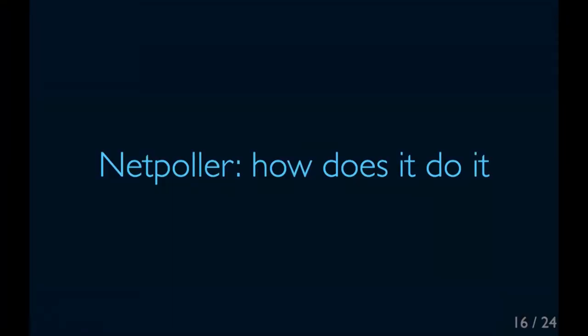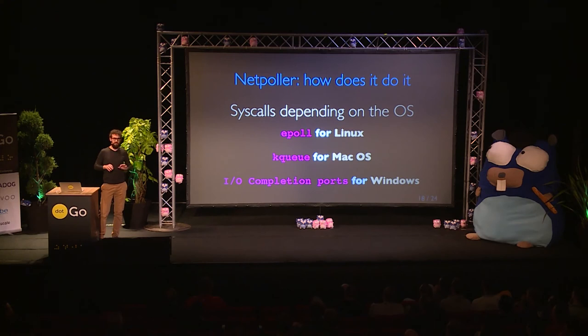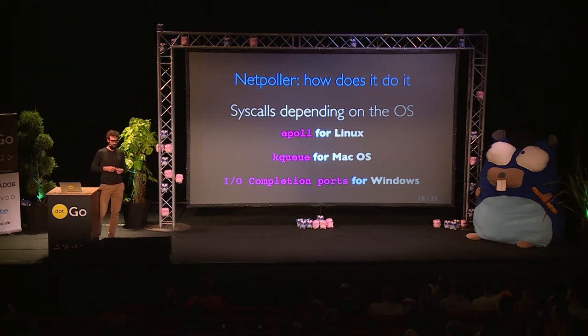The NetPoller is integrated directly in the scheduler, and it unparks Go routines only if there is some IO available for them to execute. It uses different system calls depending on the operating system: epoll for Linux — I guess some of you know about this one — kqueue for macOS, and IO completion ports for Windows.